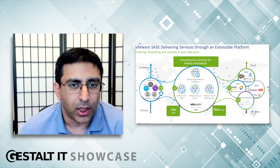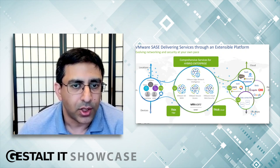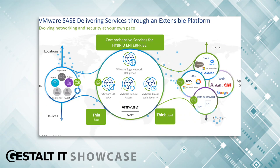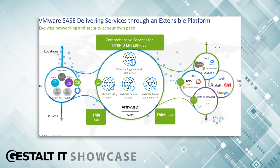There is also Edge Network Intelligence. Edge Network Intelligence is an AI ops platform integrated into the SD-WAN environment, but it can also operate independently. It's really about getting an idea of what is going on with the user's network experience as they use enterprise resources or connect to SaaS applications, accelerating both user self-remediation and helping IT teams get users back and productive.